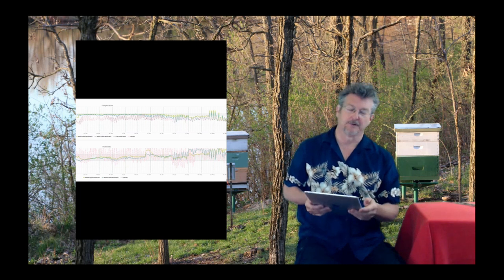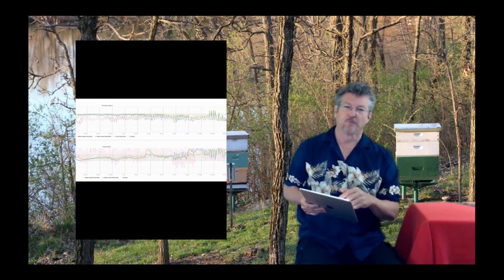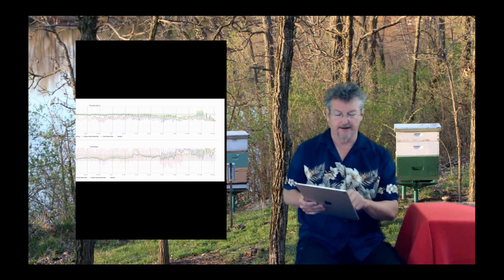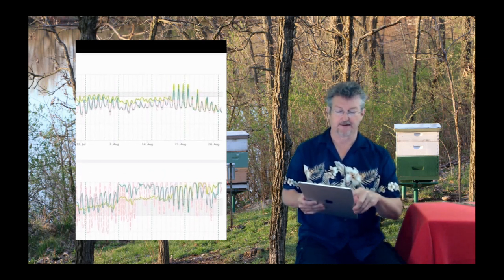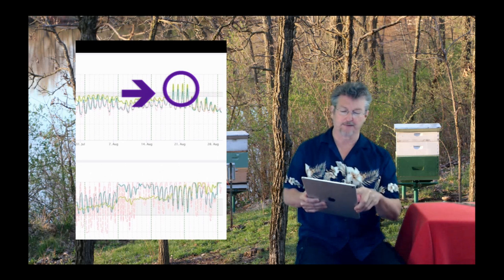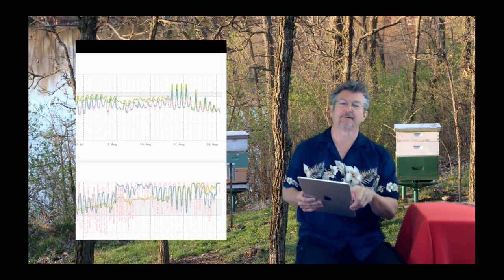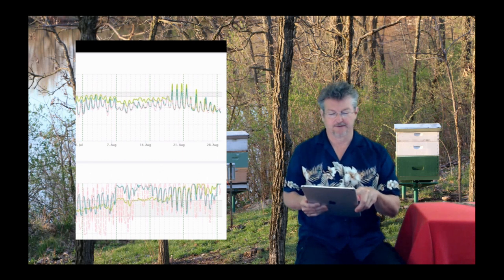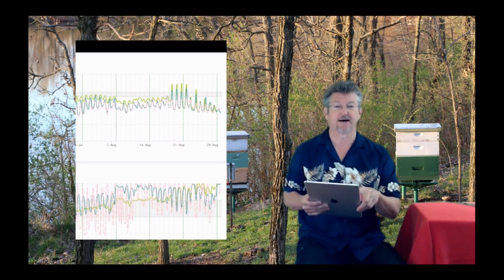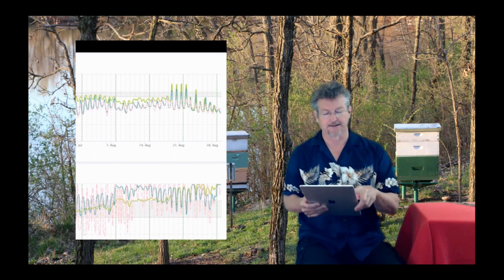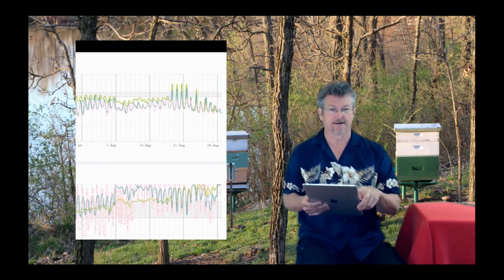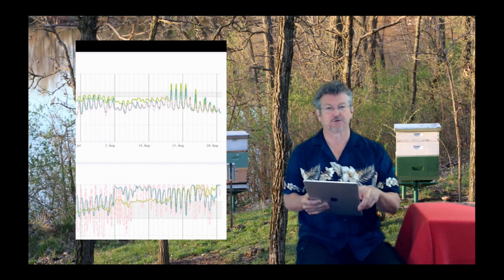This hive, though, we found out from the owner, never got very strong. Here in August, we see that there's some really big peaks and come to find out that was a robbing session. So across four or five days, the bees were robbed. During that robbing, they got very animated and fighting, and the temperature that the sensor saw went up.